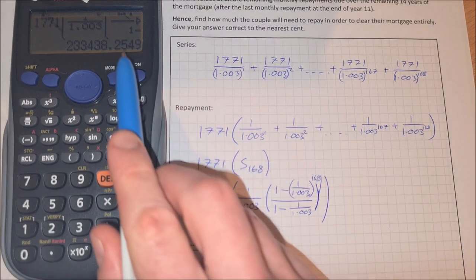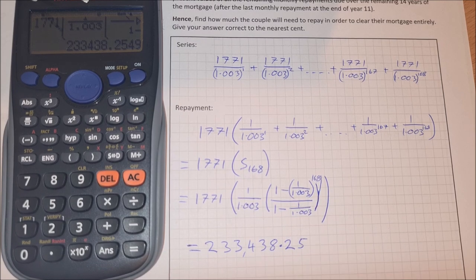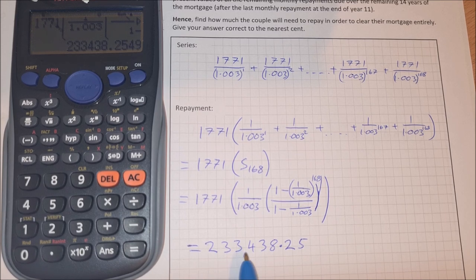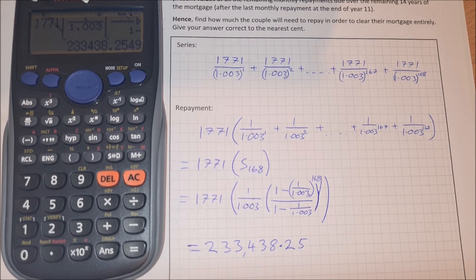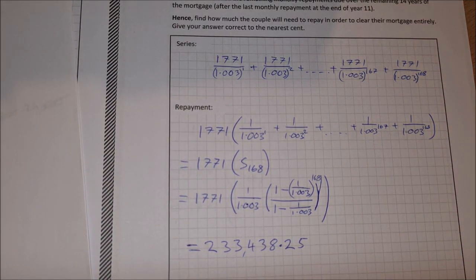And it wants it to the nearest cent, so that'd be 25 cents. So that means that the remaining amount for the 14 years that's left is 233,438 euros and 25 cents. That's how much they have to repay in order to repay the full lump sum.